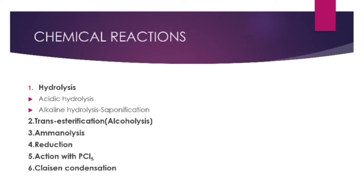The second one is transesterification, also called alcoholysis. The third one is aminolysis, and the fourth one is reduction, which is also divided into two: catalytic reduction (hydrogenolysis) and chemical reduction. The fifth one is reaction with PCl5, and the sixth one is Claisen condensation.